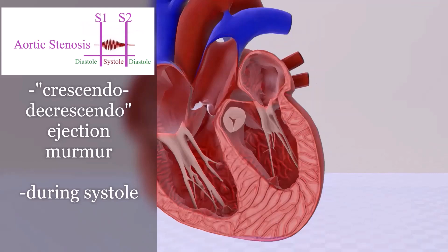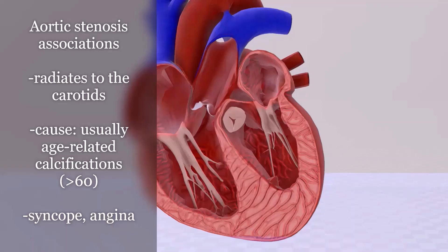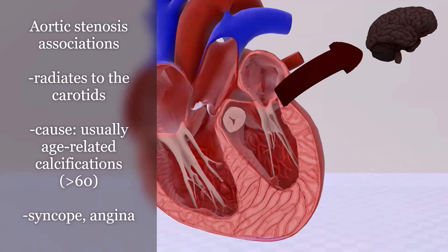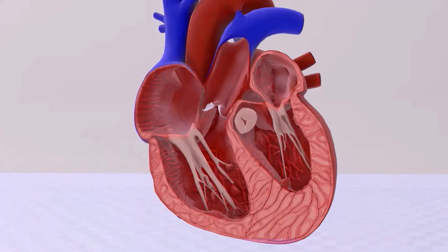Aortic stenosis radiates to the carotids due to turbulent flow reaching the neck. The most common cause is age-related calcification, especially in patients older than 60. In younger patients, it's most commonly due to early-onset calcification of a bicuspid aortic valve. Clinical features include syncope, because blood isn't reaching the brain properly, and angina, because the heart is overworked but undersupplied.